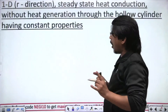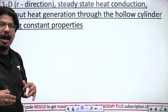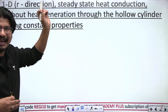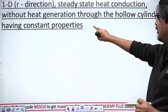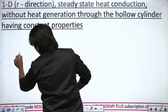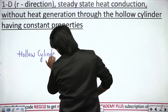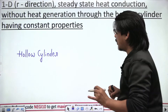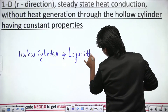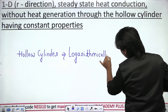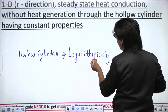Now let us discuss for the hollow cylinder. 1D in the radial (R) direction, steady state heat conduction without heat generation through a hollow cylinder having constant properties. For the hollow cylinder, the temperature varies logarithmically with radial distance. Logarithmically means a natural log (ln) will appear somewhere in the formula.